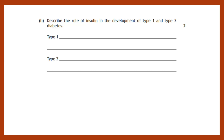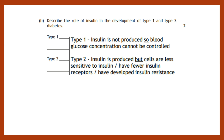Let's try some past paper questions. The question is: describe the role of insulin in the development of type 1 and type 2 diabetes. In type 1, insulin is not produced at all, so blood glucose concentration cannot be controlled. In type 2, insulin is produced, but the cells are less sensitive to insulin, or have fewer insulin receptors, or have developed insulin resistance. You need to make the connection between whether insulin is produced or if it can be utilised. One mark for each.